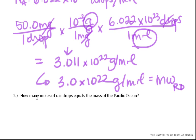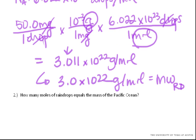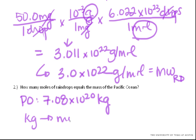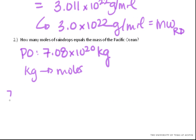Wasn't too bad. How about the next one? How many moles of raindrops equals the mass of the Pacific Ocean? Well, the Pacific Ocean was 7.08 times 10 to the 20 kilograms. And we need to go from kilograms to moles. That's what we're being asked. So let's start writing this to work through our conversions.